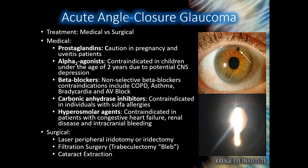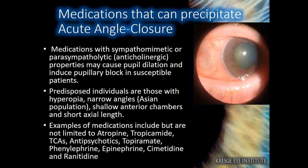Surgical management is also an option, commonly in the form of laser peripheral iridotomy, or LPI. You can see an LPI at about 1 o'clock in the upper right-hand picture. Also consider filtration surgeries and cataract extraction if need be. Certain medications can precipitate acute angle closure, often working on the autonomic nervous system, causing pupillary dilation and inducing pupillary block in susceptible patients such as those with hyperopia, narrowed angles, shallow anterior chambers, or short axial length.